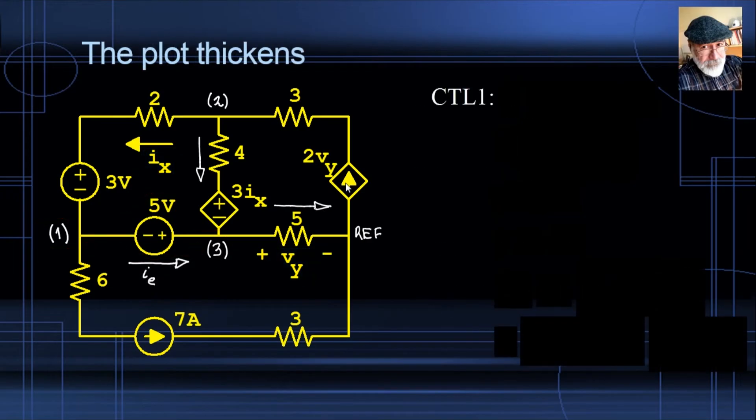First the CTL for Vy. We need to write Vy as the function of node voltages and evil currents if necessary. So who is Vy? Look at the circuit down here, and you realize that Vy is the voltage in that 5-ohm resistor. That voltage is just V3 minus Vref. But Vref is zero, so that is just V3. Sweet equation. CTL1 is Vy equals to V3. Gotta love it. Now CTL2. CTL2 is writing Ix, the other controlling variable as a function of node voltages and evil equation. Here it is, Ix.